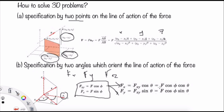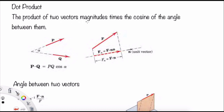If you want to find Fx directly from F, you can use F cos phi times cos theta. For Fy, you use F cos phi times sin theta. Regarding the dot product: the product of two vector magnitudes times the cosine of the angle between them is called the dot product or scalar product. So P dot Q equals PQ cos theta.